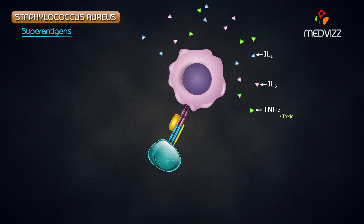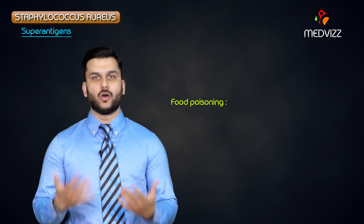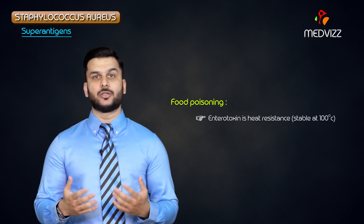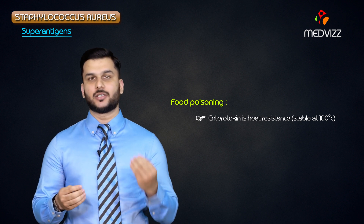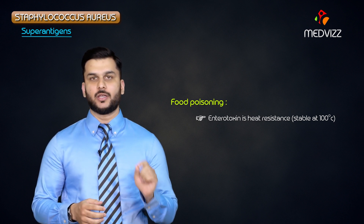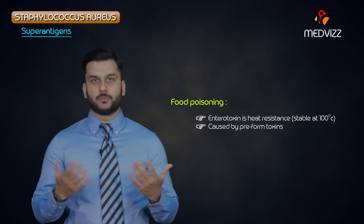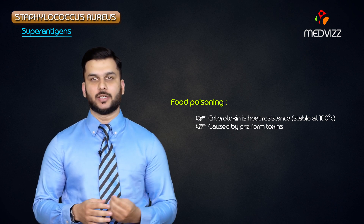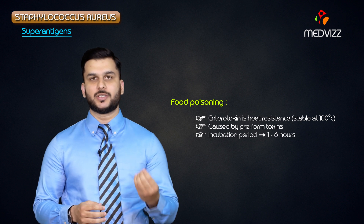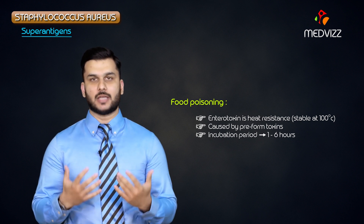Another example of a superantigen is food poisoning caused by Staphylococcus aureus. This enterotoxin is heat-resistant, meaning it is stable even at temperatures of 100 degrees Celsius. Very importantly, this food poisoning is caused by preformed toxins. Staph aureus food poisoning is very fast-acting — onset of symptoms occurs within one to six hours, making it one of the fastest-acting toxins, and it typically produces watery diarrhea.